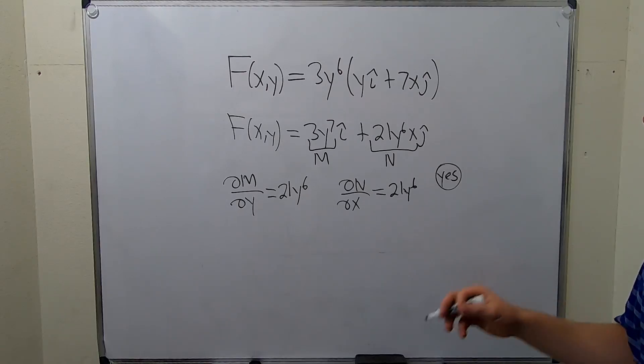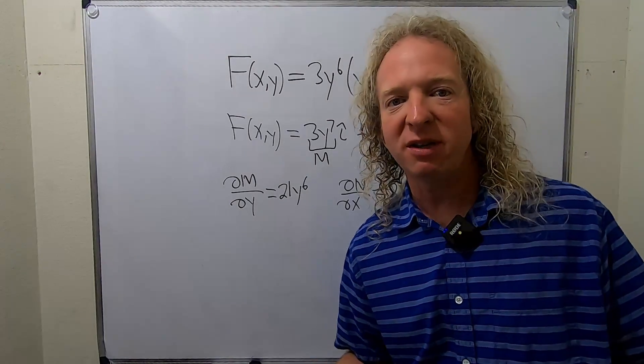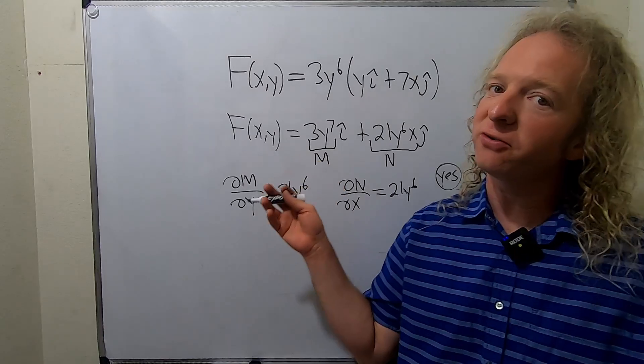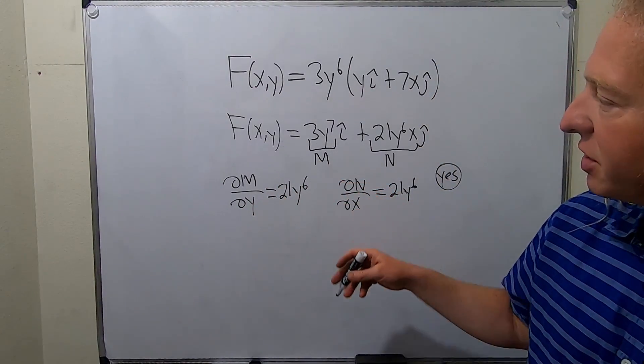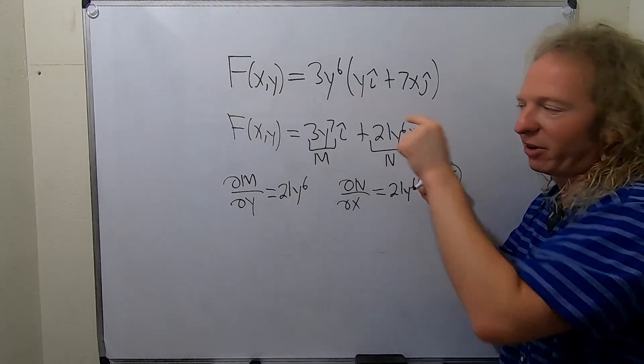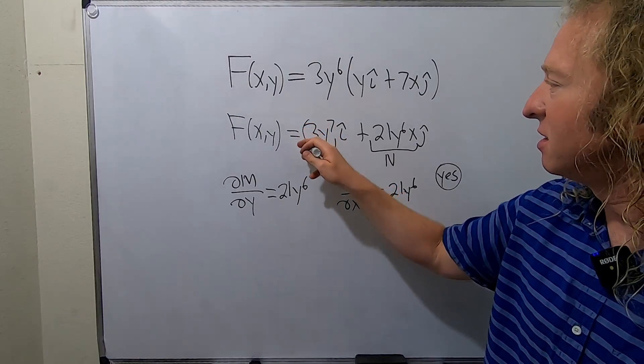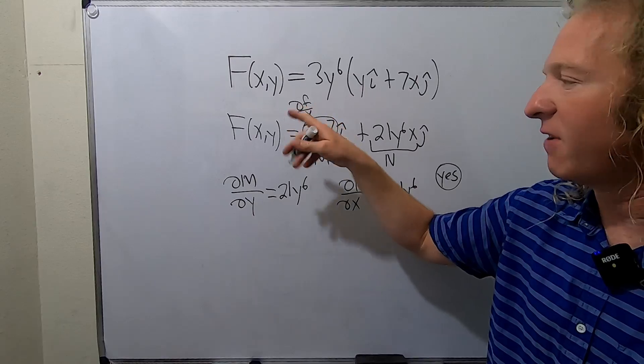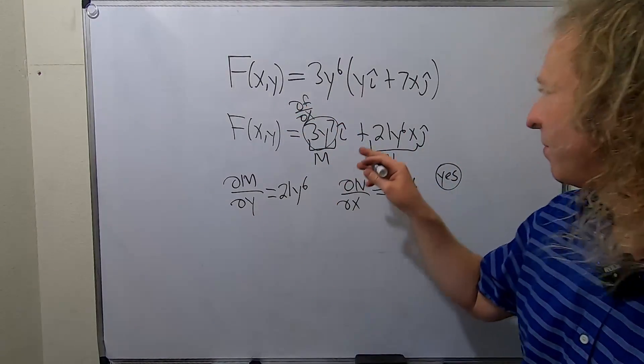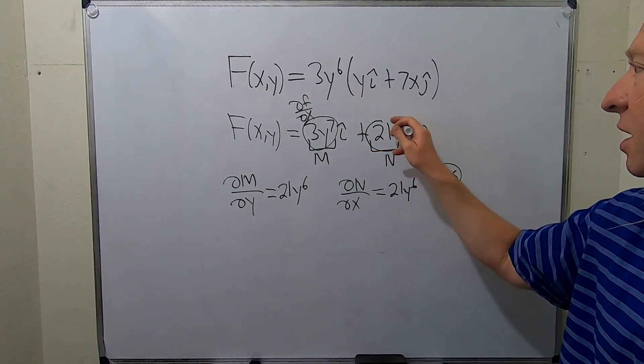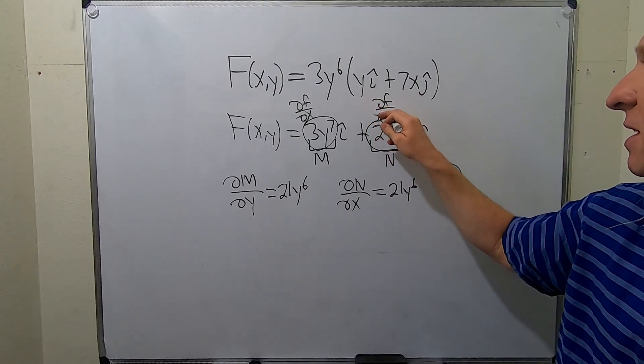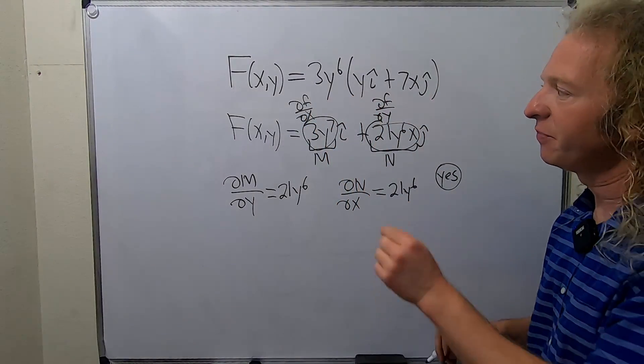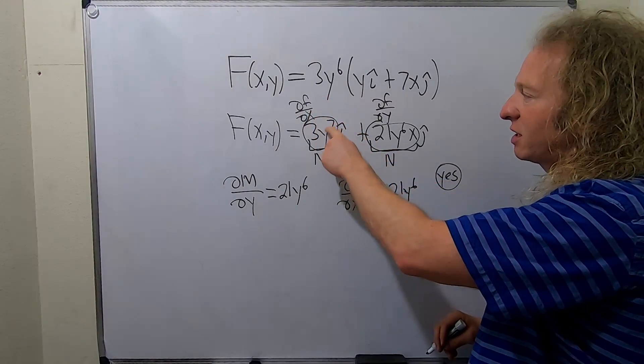So now we have to find the potential function. What does it mean for this vector field to be conservative? It means there is some unknown function, which we'll call little f, such that this is the gradient of little f. So this piece here is ∂f/∂x. Remember, the gradient is a vector of the first order partials, and this here is ∂f/∂y. So because big F is conservative, there exists some unknown function little f such that this is ∂f/∂x and this is ∂f/∂y.